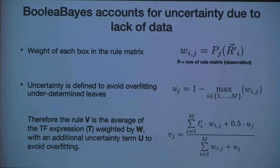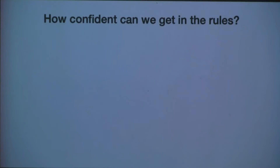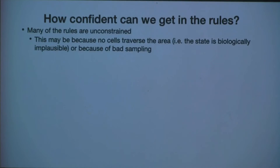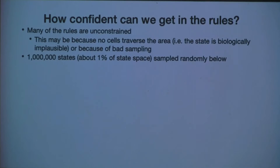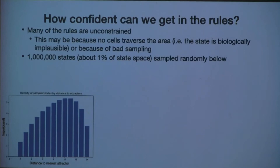This is effectively a Markov process. Many of the rules are unconstrained — this may be because we don't have data in that region, possibly because no cells traverse that area, the biological state is implausible based on network connections, or simply because of bad sampling with only 50 data points. To explore this, I randomly sampled a million states from the state transition graph. Most of the sampled states are about 8 to 12 steps away from any attractor, which makes sense since we expect data points to be concentrated near attractors.